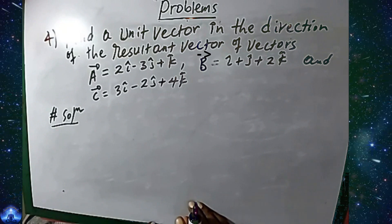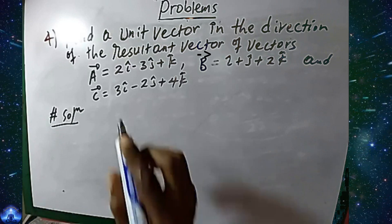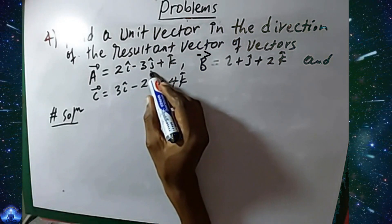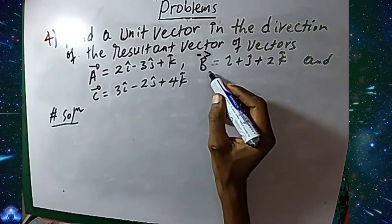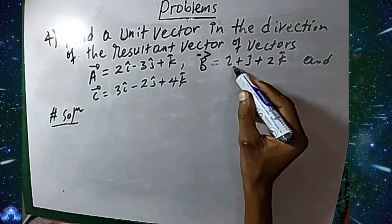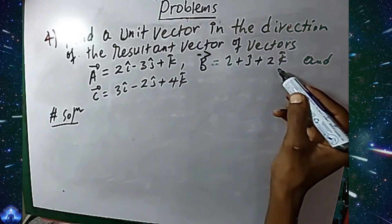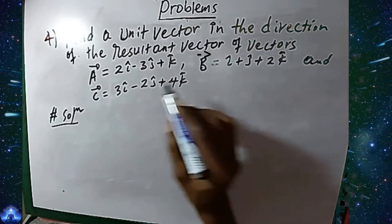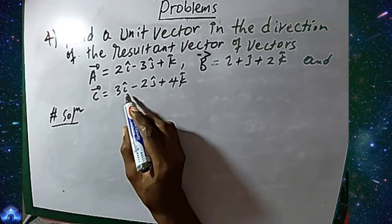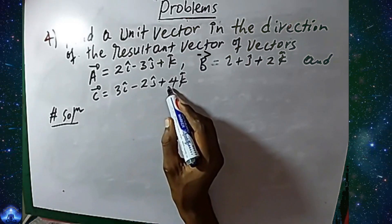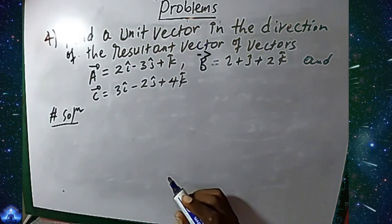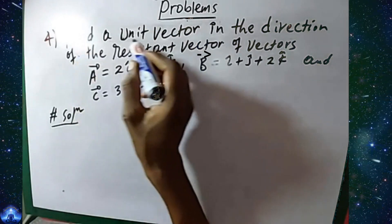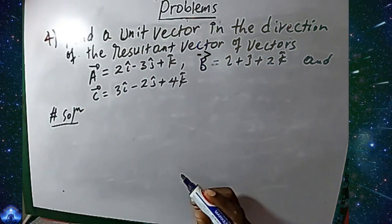Find the unit vector in the direction of the resultant vector of: vector a equals 2i minus 3j plus k, vector b equals i plus j plus 2k, and vector c equals 3i minus 2j plus 4k. We have three given vectors, and we are going to find the unit vector in the direction of the resultant vector.